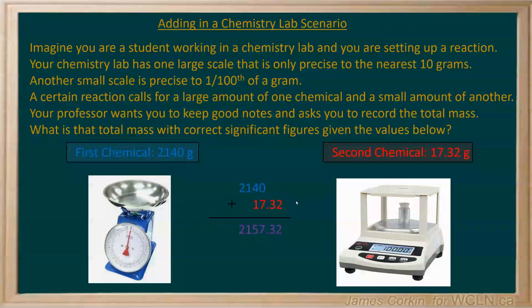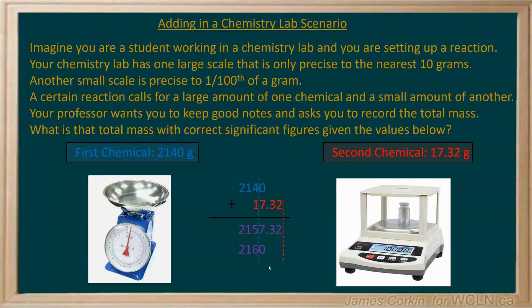When you put this into a calculator, the number that comes out is 2157.32. But I know I need to round it. Because the 4 is the digit that determines the precision of 2140, draw a line straight down after the 4. Do the same for any other numbers in the addition, then take the line that is furthest to the left — that's the one that tells you where to round off. So in this case I need to round the 5. Because 7 is above 5, I round the 5 up to a 6. So we get a final answer of 2160 grams.